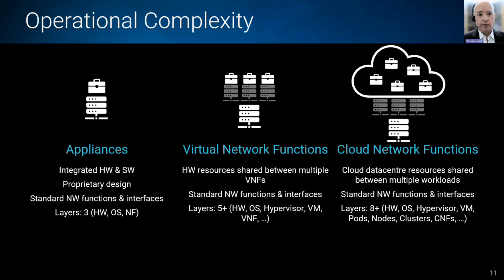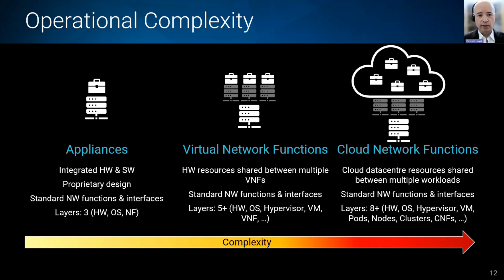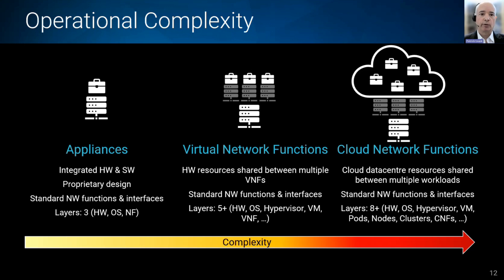I'm old enough to remember the 1990s and 2000s when you bought a network function — you bought a proprietary appliance, a prebuilt combination of hardware and software that did a specific job in the network. But the challenge is that the world is getting more complex. Not only do we have to handle a lot of those legacy appliances still around, we have gone through phases of virtualization, which introduced more complexity with more layers of technology involved in delivering a network function.